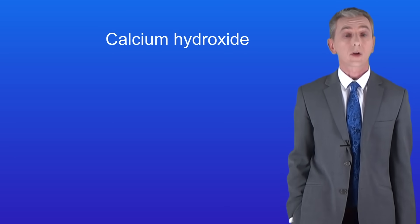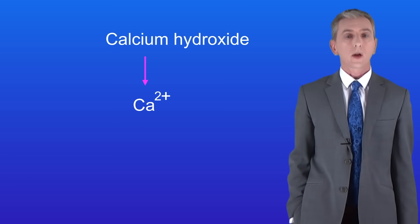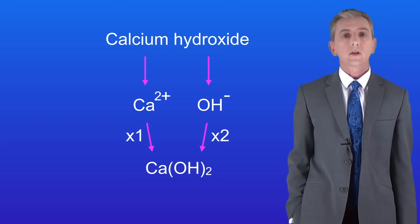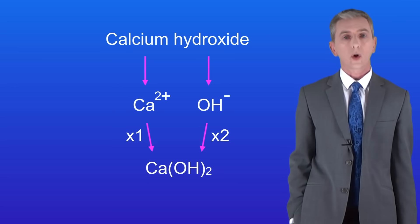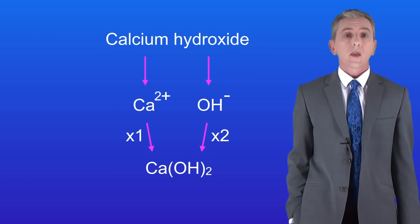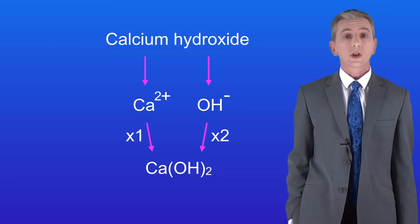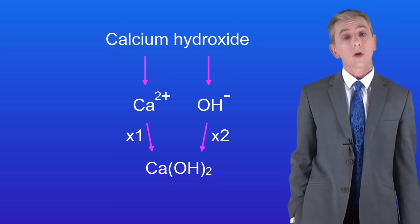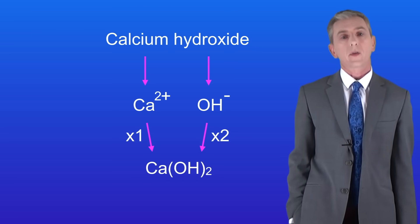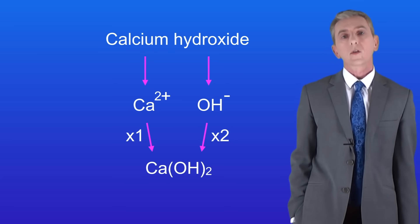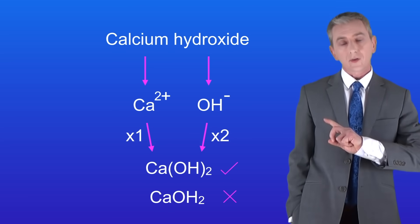The next compound is calcium hydroxide. The calcium ion has a 2+ charge and the hydroxide ion has a 1- charge. Pause the video now and work out the formula. We need two hydroxide ions to cancel out the charge on one calcium ion, so the formula of calcium hydroxide is Ca(OH)2. Now there's a problem here: if we place a small 2 directly to the right of OH, this means we have two hydrogen atoms rather than two hydroxide ions. We've got to put brackets around the hydroxide to show that the 2 multiplies the whole hydroxide. So Ca(OH)2 is correct, whereas CaOH2 is wrong.